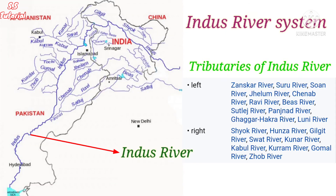The Indus river system consists of the Indus river and all its tributaries. On the left side: Zanskar, Jhelum, Chenab, Ravi, Beas, Satlej, Luni river, etc. On the right side: Shyok river, Hunza river, Kabul river, Gomal river, etc.